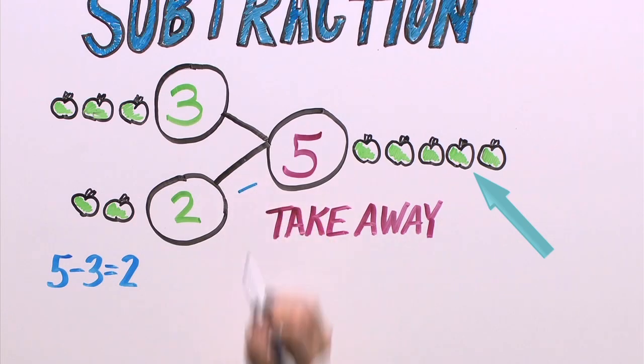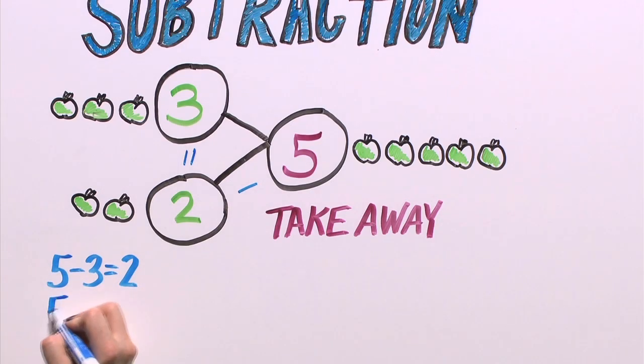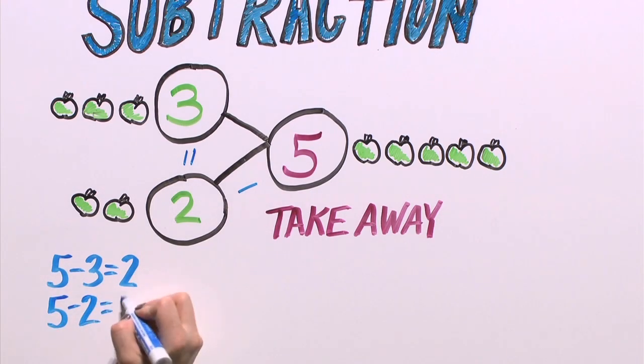Five apples, take away two apples, equals three apples. Five, take away two, equals three.